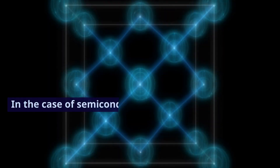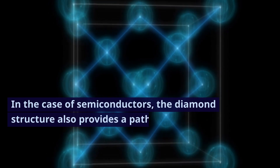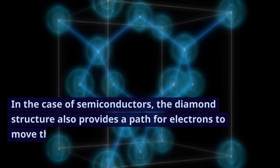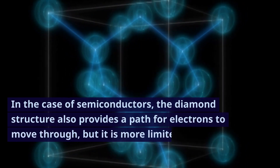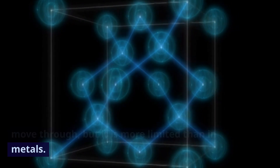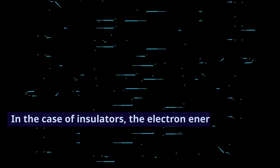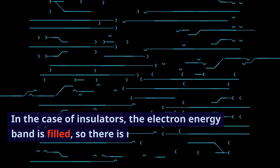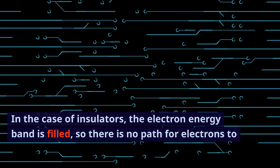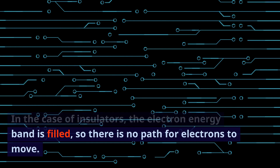In the case of semiconductors, the diamond structure also provides a path for electrons to move through, but it is more limited than in metals. In the case of insulators, the electron energy band is filled, so there is no path for electrons to move. However, semiconductors and insulators have more limited electron mobility, and their electrical conductivity is lower than that of metals.